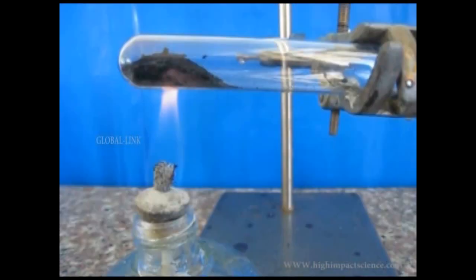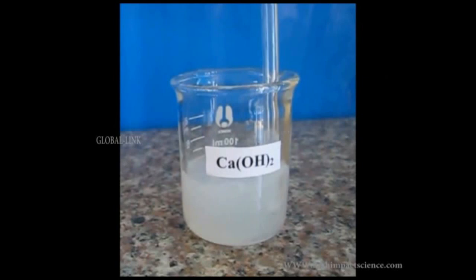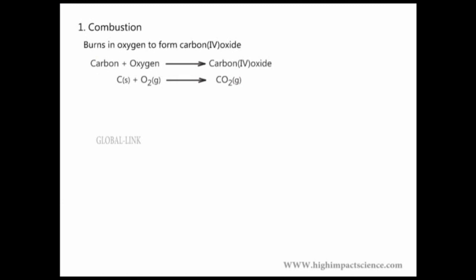The red glow shows that the reaction produces heat. The white precipitate shows that the gas produced is carbon-4 oxide. All forms of carbon burn in oxygen to produce carbon-4 oxide. However, the temperature at which they burn varies from one allotrope to another.